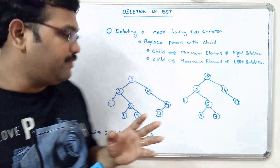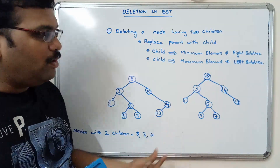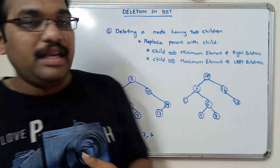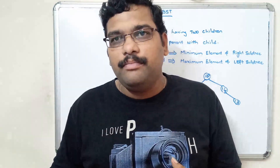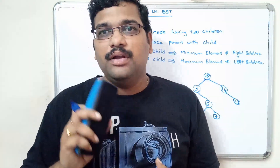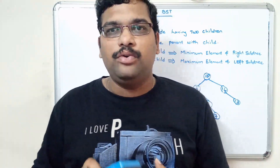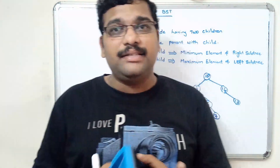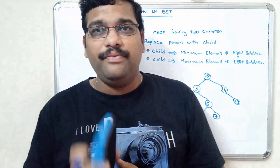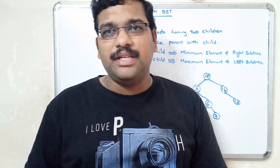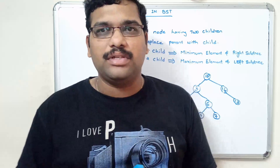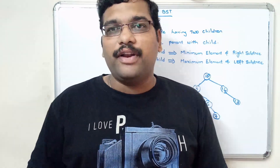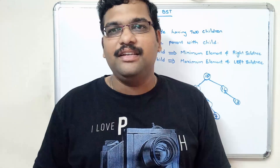Don't get confused — it is simple and easy. So there are three ways to delete an element from the BST: one is leaf nodes, a node with one child, and a node with two children. If you have any doubts regarding this deletion process, feel free to post in the comment section. If you understood the session, please like, share with your friends, and don't forget to subscribe to our channel. Thanks for watching, thank you very much.